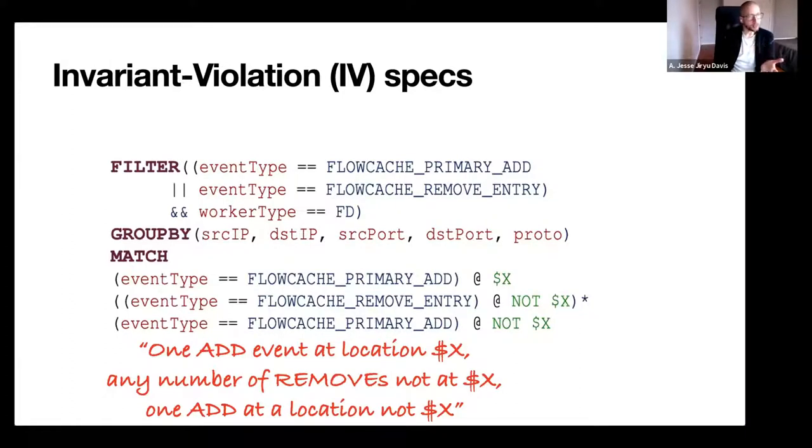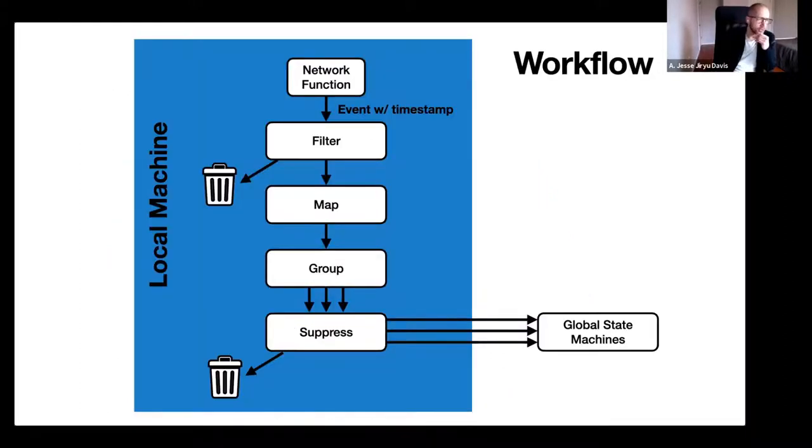Aragog is a system for taking an invariant violation spec like this one and applying it to events that are generated by a whole distributed system. They want this checking to be fairly cheap, scalable, and they want to catch violations very soon after they occur. So they need some sort of big event processing architecture. And their architecture looks like this. One particular machine is the blue box. You could imagine that a flow decider machine has all the components in the blue box. There's the network function, which is what the actual distributed system is doing. In the case of the flow decider, it's deciding where to forward packets to. That's the program that is the subject of our checking.